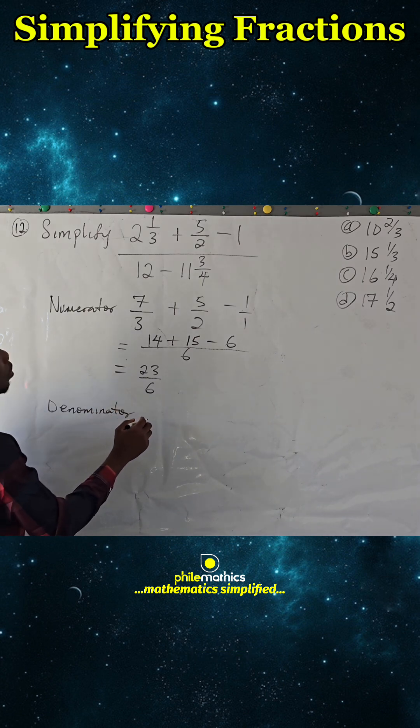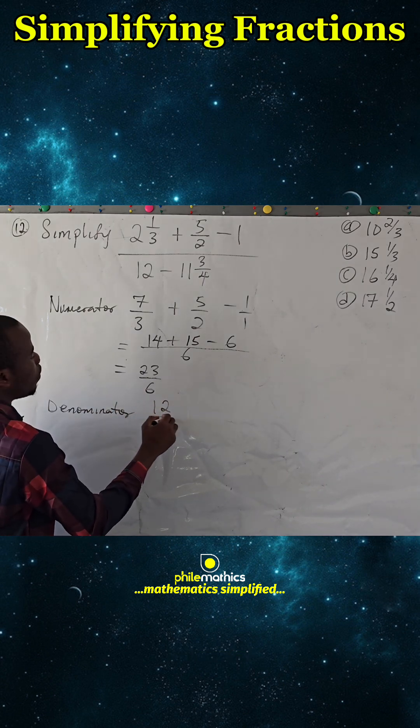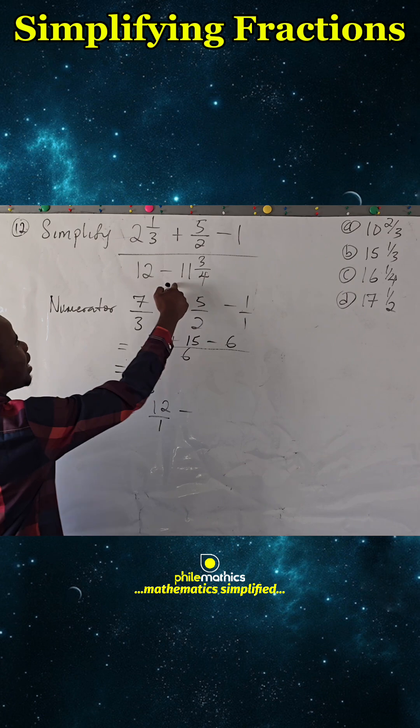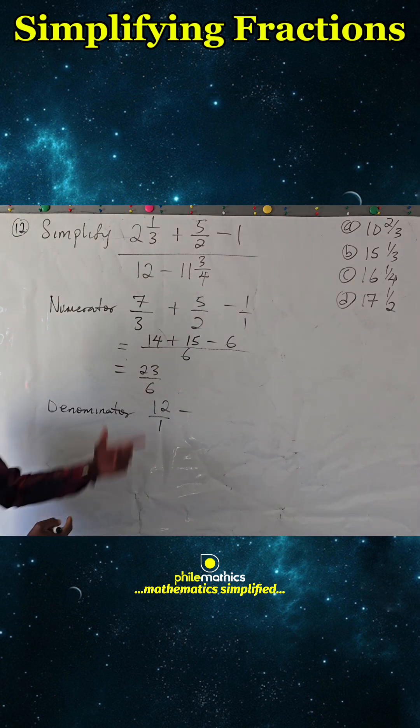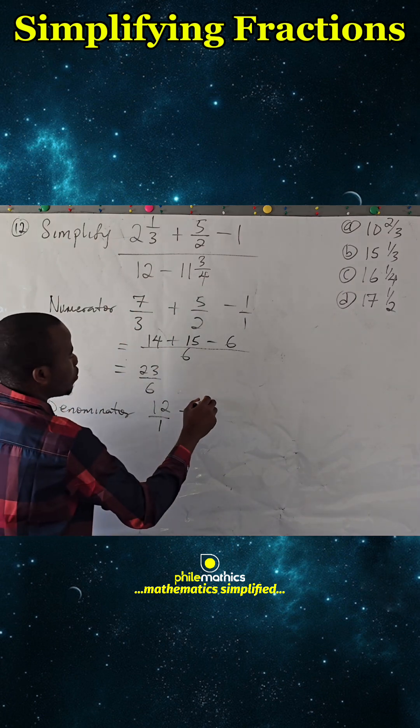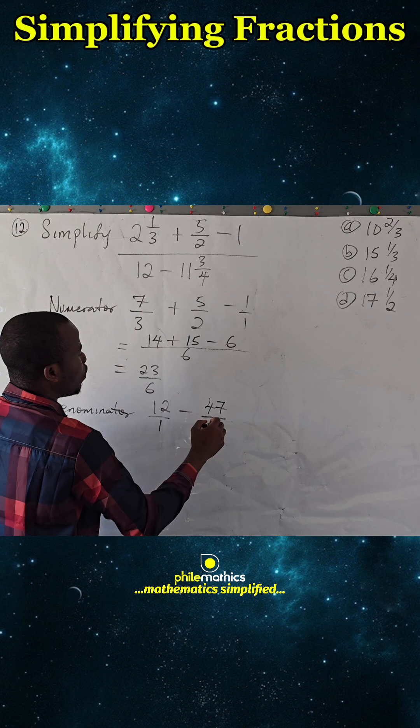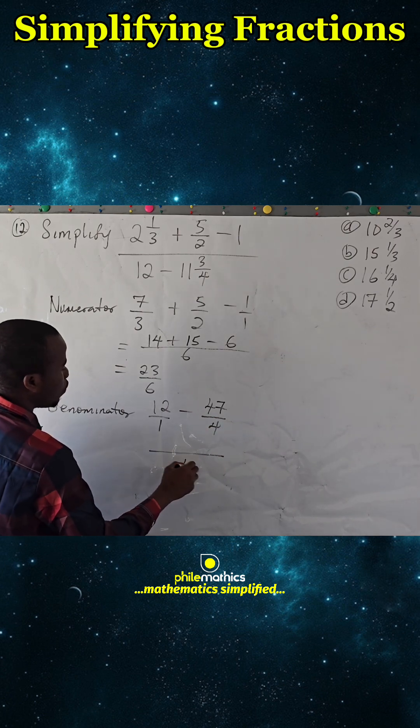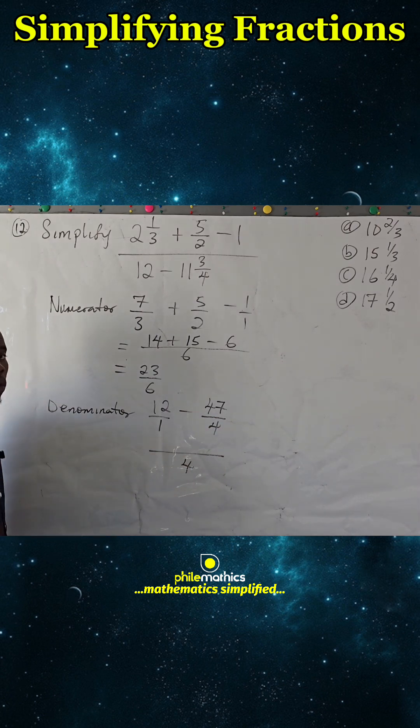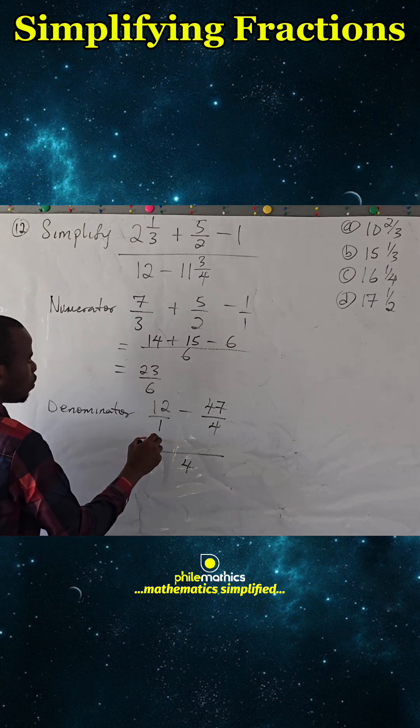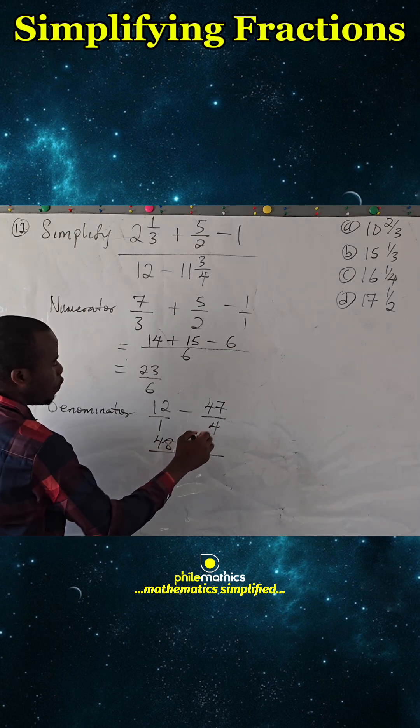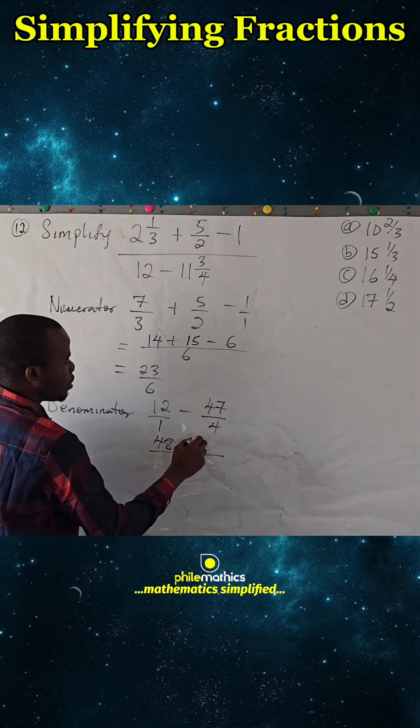Now for the denominator, we have 12 over 1 minus—4 times 11 is 44, plus 3 is 47 over 4. And the LCM is 4. 1 into 4 is 4, times 12 is 48. 4 into 4 is 1, times 47 is 47.